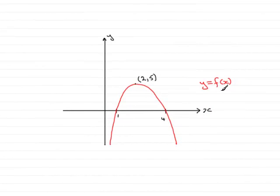Hi. Now in this part of the question we're given y equals f of x as this curve with a maximum point at 2, 5 and it crosses the x axis at 1 and 4.